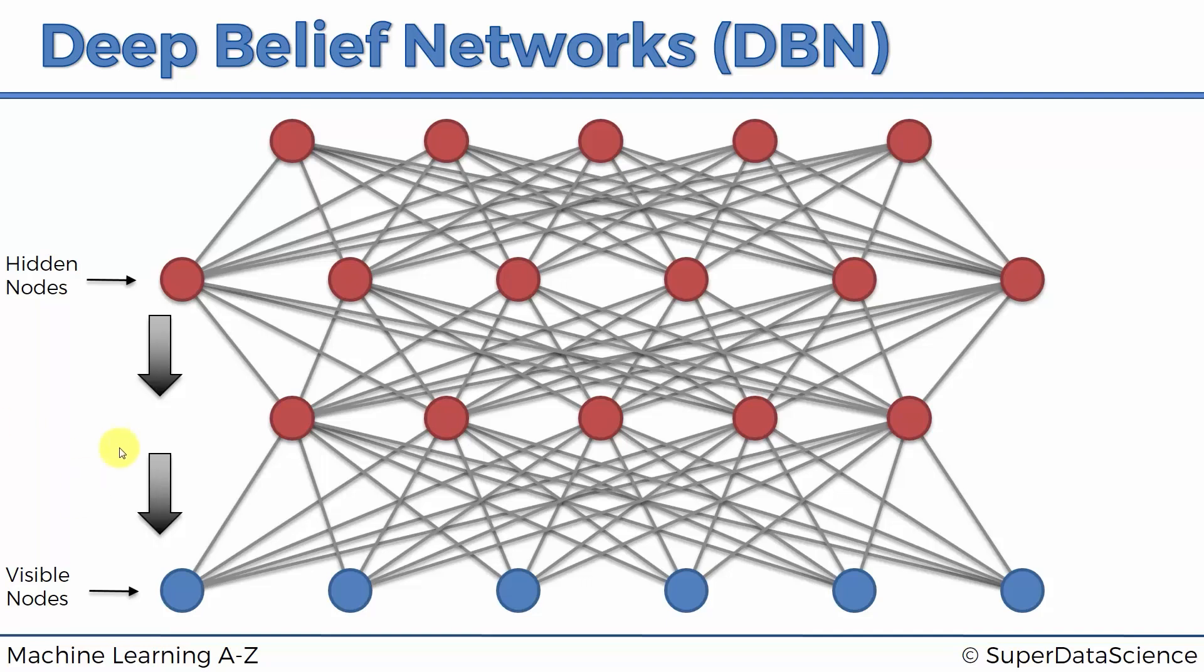There's a greedy layer-wise training algorithm, which basically trains these RBMs. So the directionality, you set it up after you've trained up the weights. First you train the restricted Boltzmann machines with the undirected connections. And the greedy layer-wise training is you train this layer, you train this layer, you train this layer—so you train them layer by layer as RBMs.